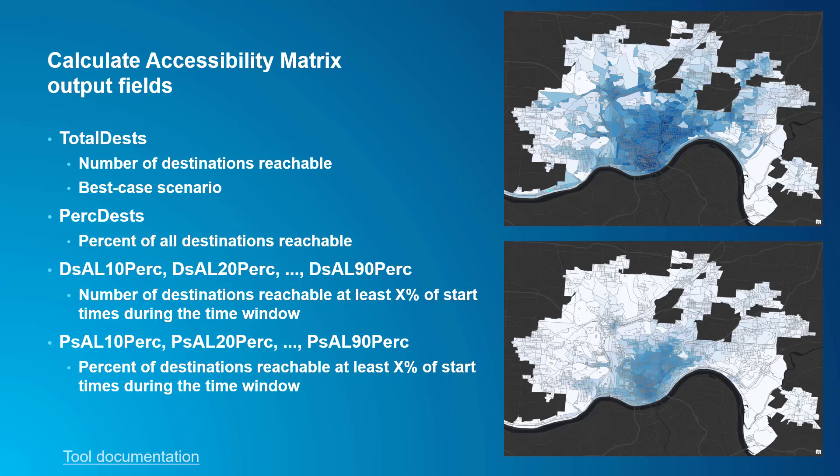I want to talk about the output fields the tool produces because those are complicated. The tool output contains the following fields: total desks, perk desks, and then a series of fields called DSAL 10-perk, 20-perk, etc., and PSAL 10-perk, 20-perk, etc. Total desks is the total number of destinations reachable by this origin at least once within the time limit. Perk desks is the percentage of all destinations reachable — it's total desks divided by the total weighted number of destinations included in the analysis. For example, if there are 100 destinations total and our origin reached 10 of them, perk desks is 10%.